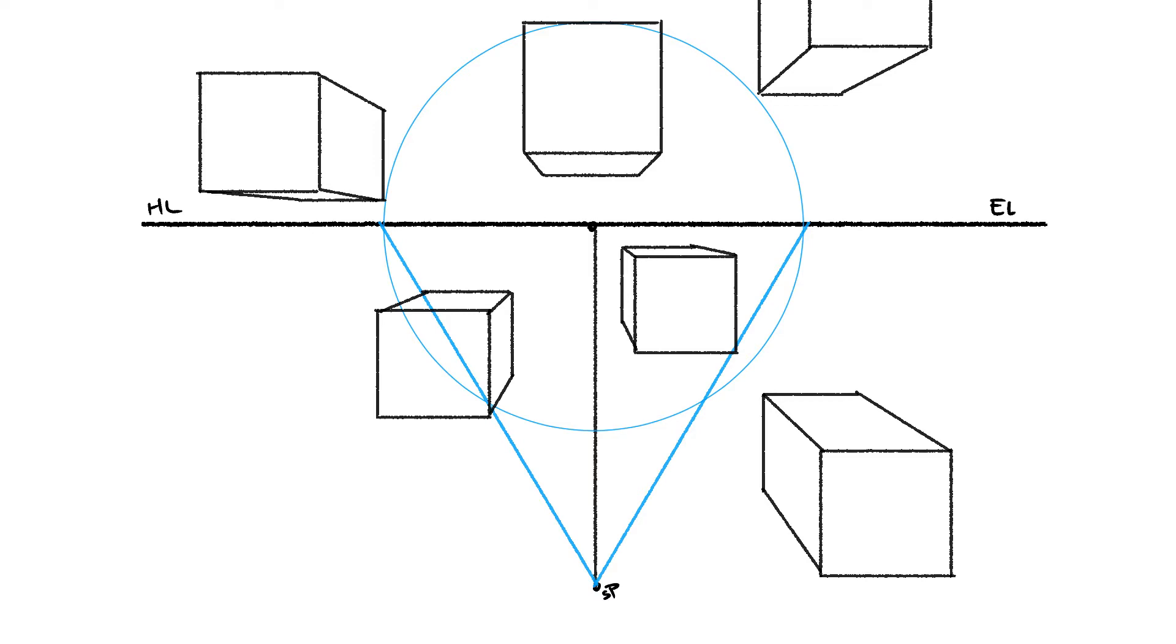So knowing about the cone of vision, knowing where distortion happens, and being able to understand and control these things gives us an incredible amount of freedom to compose pictures with.